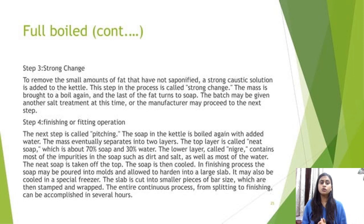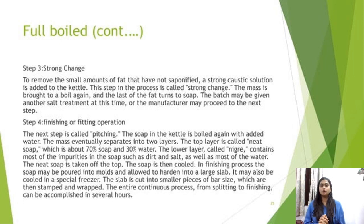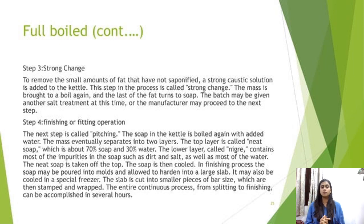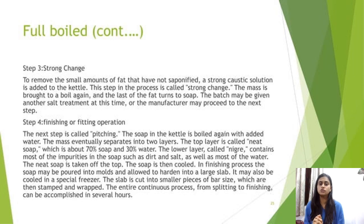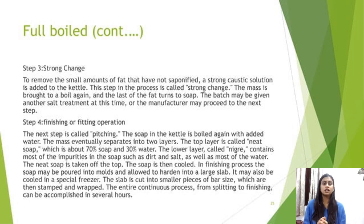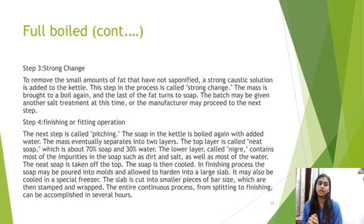Step three — strong change: to remove the small amounts of fat that have not been saponified, a strong caustic solution is added to the kettle. This step is called strong change. The mass is brought to a boil again and the last of the fat turns to soap. The batch may then be given another salt treatment or the manufacturer may proceed to the next step.